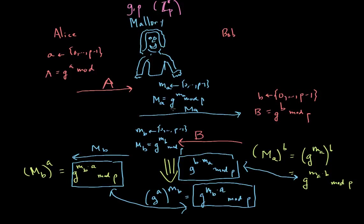So effectively, what we've done here is shown how somebody who can actively interfere with the protocol, actually modifying the protocol messages and replacing them with their own can interfere with Diffie-Hellman. And so really, Diffie-Hellman, or textbook Diffie-Hellman, as people typically call it, is only secure against passive eavesdroppers.